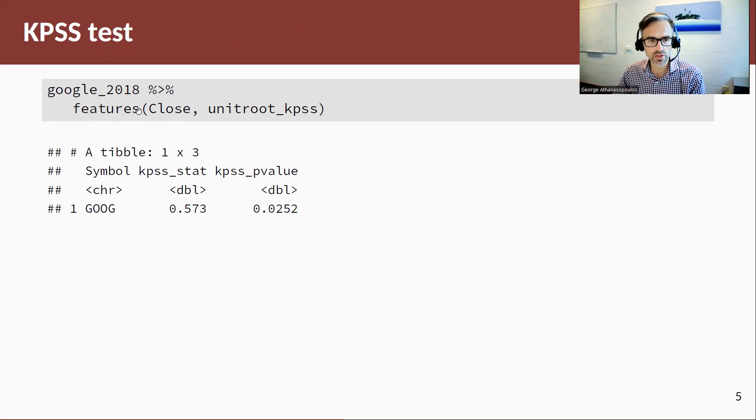So we can use the features function and from there we can call the unit root KPSS test. Now remember, here's the value of the KPSS test and this is a p-value associated with that. Remember that the null is that our data is stationary, so this is strong evidence that we reject the null of being stationary, hence we need to perform a difference, we need to take a difference.